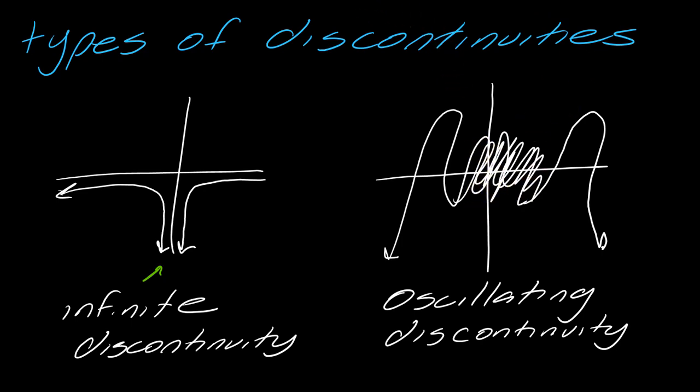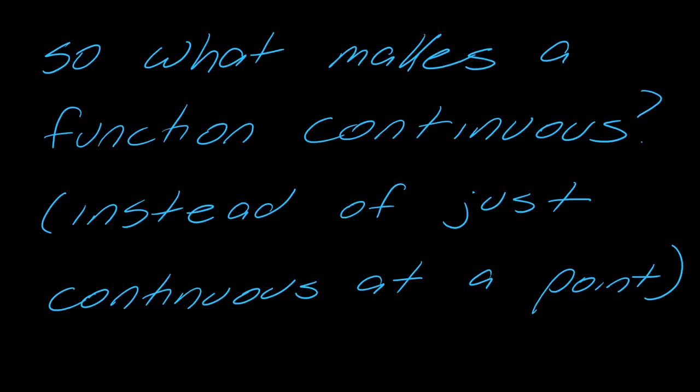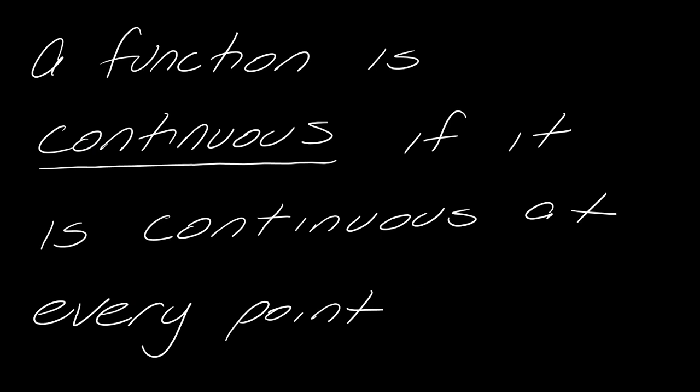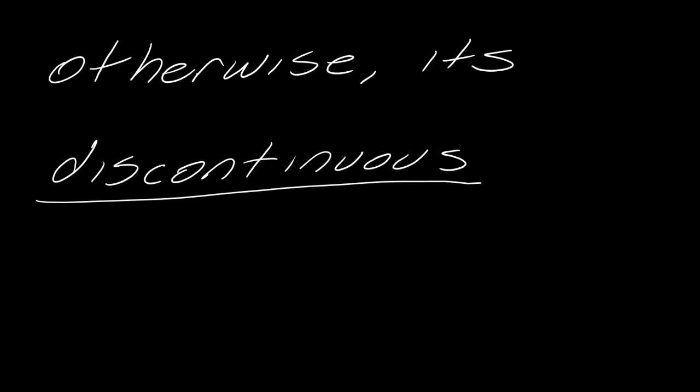What makes a function continuous — when do we say something is continuous versus it just being continuous at a point? Mathematicians aren't very creative sometimes when we name things, so a function is continuous if it is continuous at every point. There are two different uses of the word continuous: continuous at a point, which is what we've been talking about, and just straight-up continuous — meaning continuous at every point. If it's not continuous, then we say it's discontinuous.